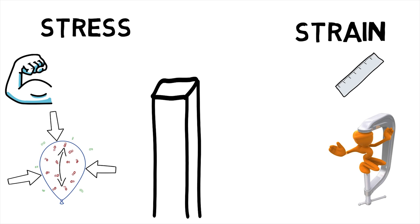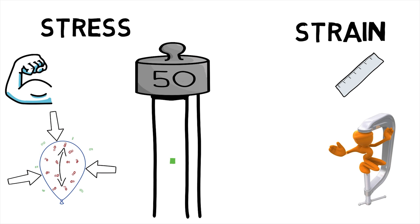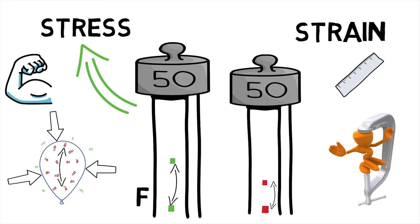For example, when a solid vertical bar is supporting a weight, each particle in the bar pushes on the particles immediately below it. The force between the bar and the particles is called stress and the actual deformation of the particles is called strain.